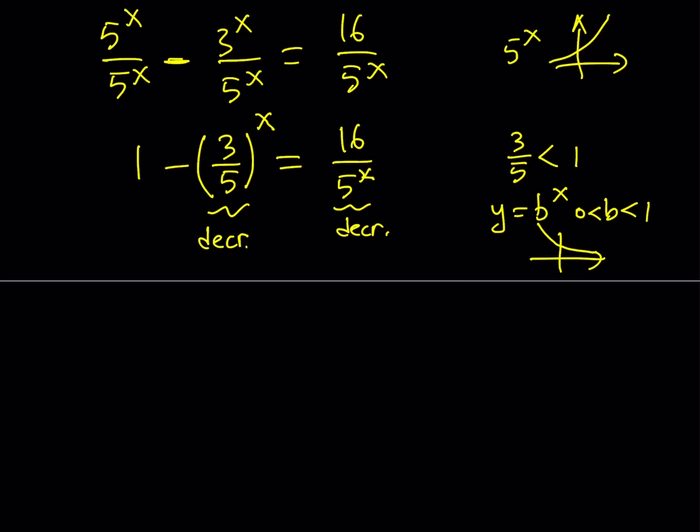No. The left-hand side, we are subtracting the decreasing function from 1. In other words, we are negating the function. Notice the negative sign. If you multiply a decreasing function by negative 1, it is going to be increasing because you're basically flipping it. So we have an increasing function plus 1. Plus 1 just moves it up. So we have an increasing function on the left-hand side and a decreasing function on the right-hand side.